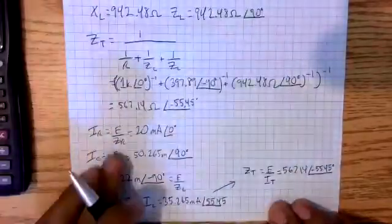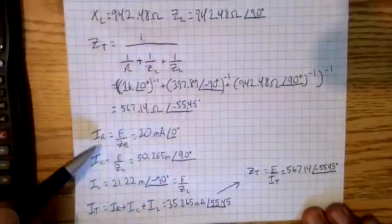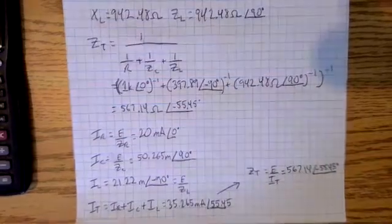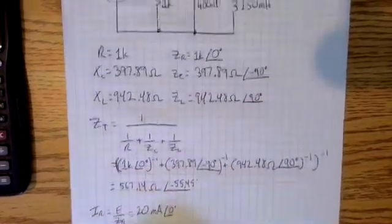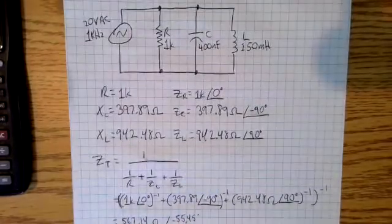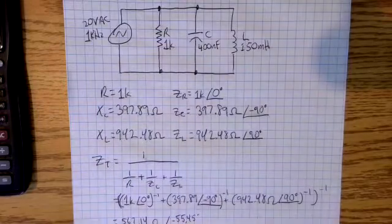So either way, you can calculate it directly, or you can calculate it by getting all of your branch currents. I hope you find this helpful. I will post this document along with the video. And good luck.